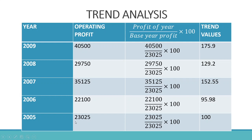The base year 2005 value of 23,025 is taken as 100, so 23,025 divided by base year profit into 100 equals 100. The first step is finding the base year — the oldest period is taken as the base year and its value is set to 100. The trend values for all other years are then found based on the base year profit.